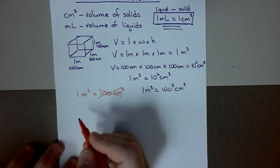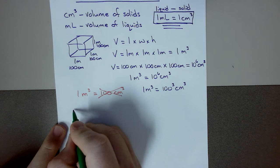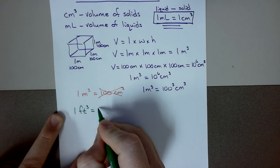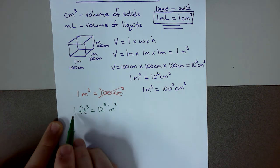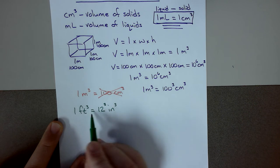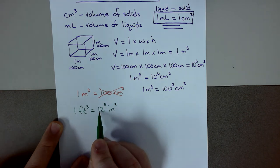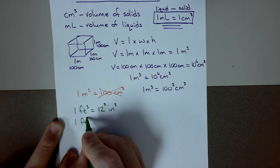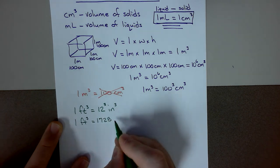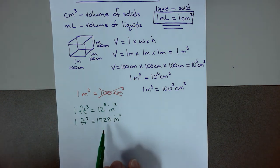This works for any kind of distance measurement cubed for volume. For example, if I have cubic feet and want to know how many cubic inches are in one cubic foot — we know one foot is 12 inches, but because it's cubic feet, we have to cube the distance: 12 cubed inches cubed. So one cubic foot equals 1,728 cubic inches. Make sure you cube both the number and the unit when working with solid volumes.